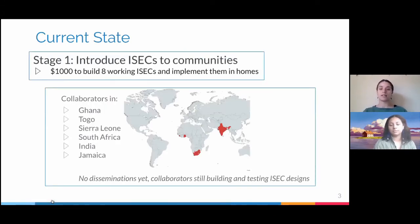Currently, everyone is in stage one of three stages of our grant. Each global collaborator has to be vetted by the dissemination team. And once they are vetted, they are given $1,000 to build eight ISECs and implement those ISECs into communities that they have connections with currently. All of the countries our global collaborators are in include Ghana, Togo, Sierra Leone, South Africa, India, and Jamaica. And again, currently, we are all still in the building stage. No ISECs have been disseminated.